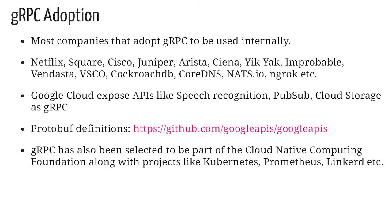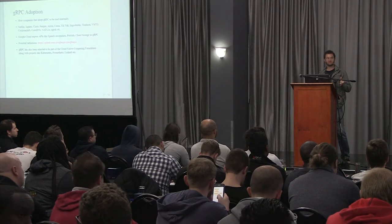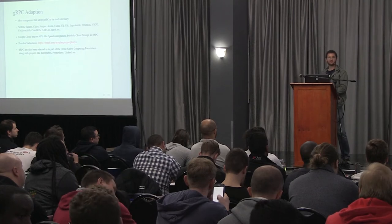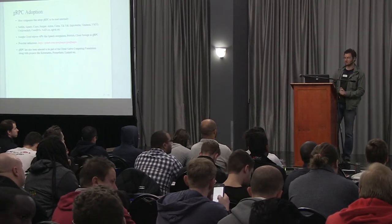gRPC adoption: a lot of companies use it internally, mostly for microservices communication, since it supports many languages. A couple of names there — Square was the first to really incorporate it into their company. Google Cloud exposes some of their APIs, like PubSub and Cloud Storage, currently as proto files. If you go to the GitHub Google APIs repository, you'll see a lot of proto-definition files that you can start using.